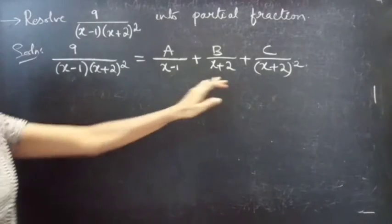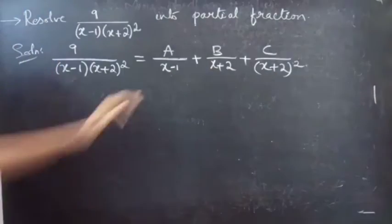Now take the LCM of these three denominators. The LCM will be (x minus 1) into (x plus 2) whole square. Let us consider this as equation 1.